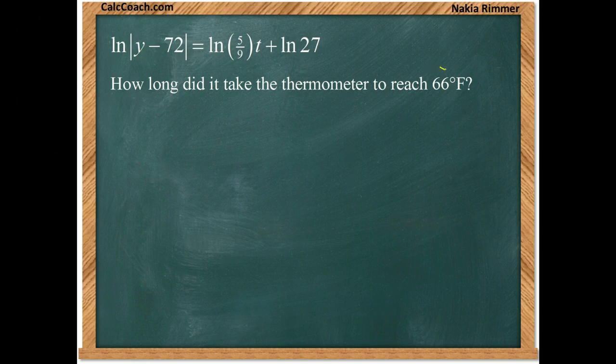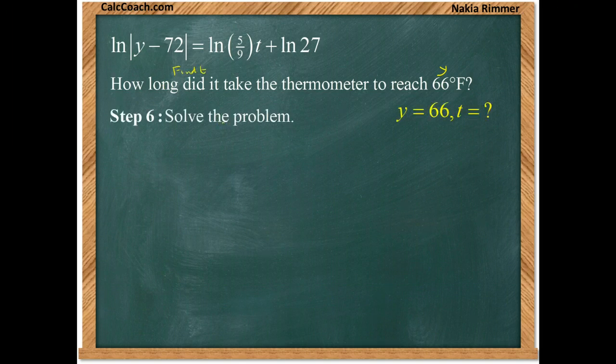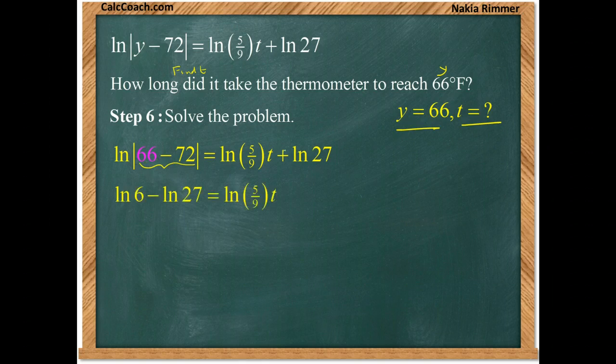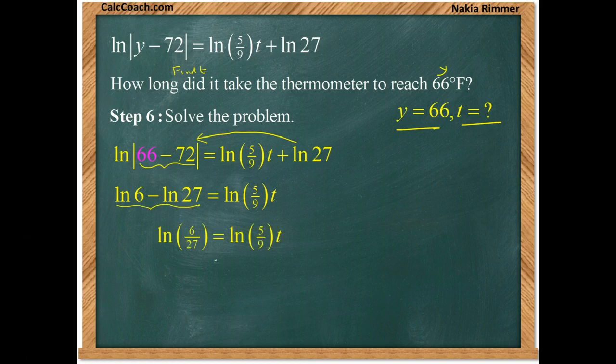So 66 is a Y, and how long, we want to find out what T is. So let's solve the problem. When Y is 66, what is T? 66 take away 72, that gives you a 6 after absolute value. Ship the 27 over to the other side. We have that same process of combining these into one. And then we could reduce again and call that 2/9.